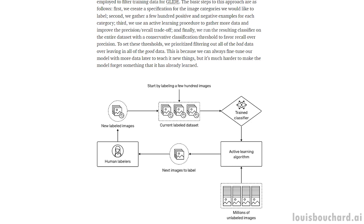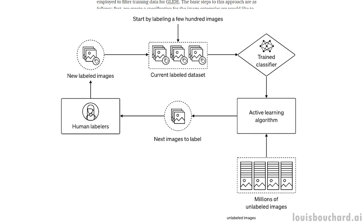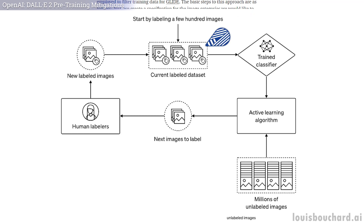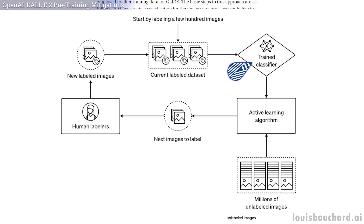But how do they do that exactly? They build several models trained to classify data to be filtered or not, by giving them a few different positive and negative examples, and iteratively improve the classifiers with human feedback. Each classifier went through the whole dataset, deleting more images than needed, just in case, as it's much better for the model to not see bad data in the first place rather than trying to correct the shot afterward.